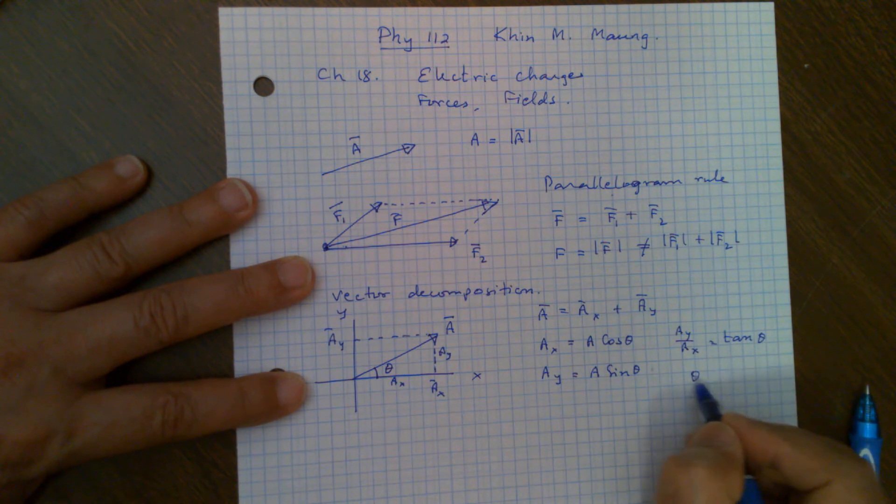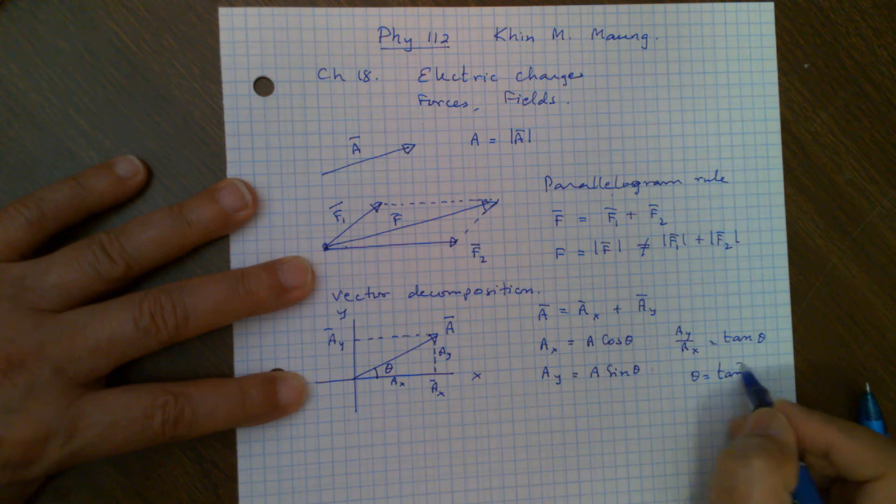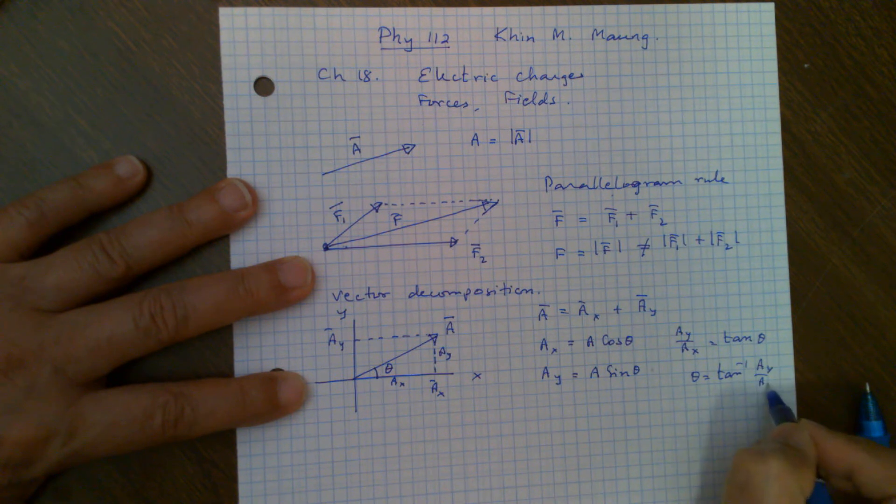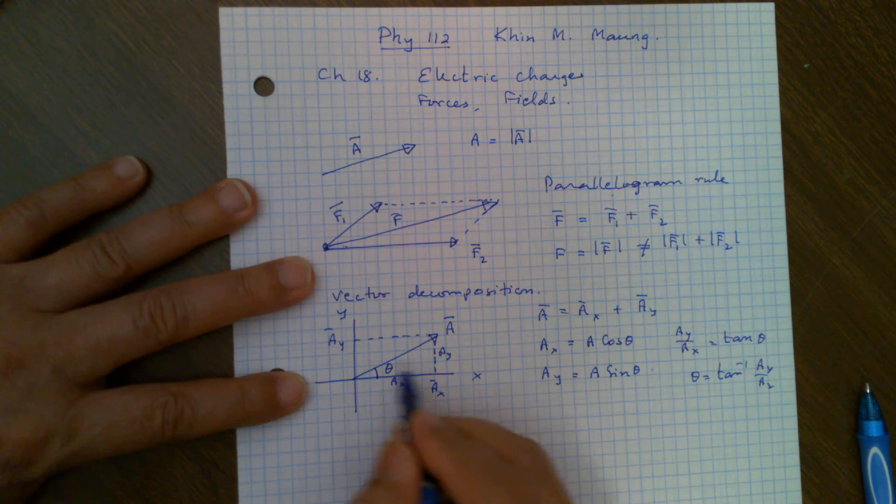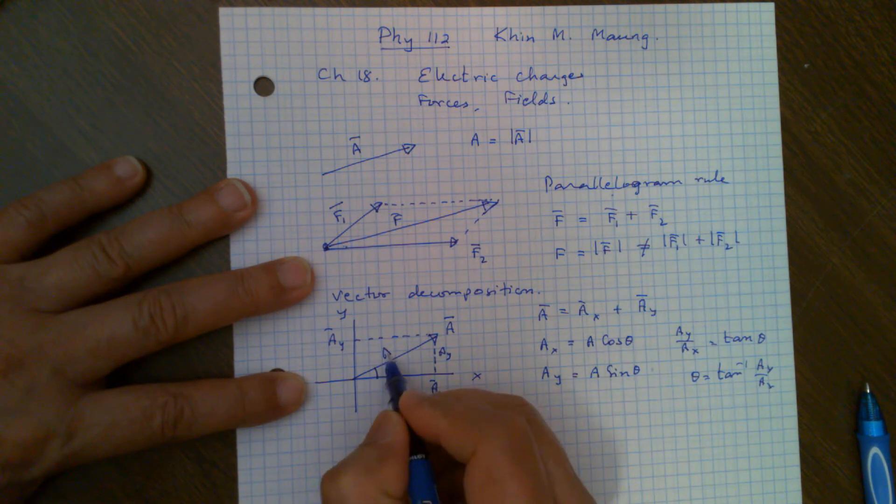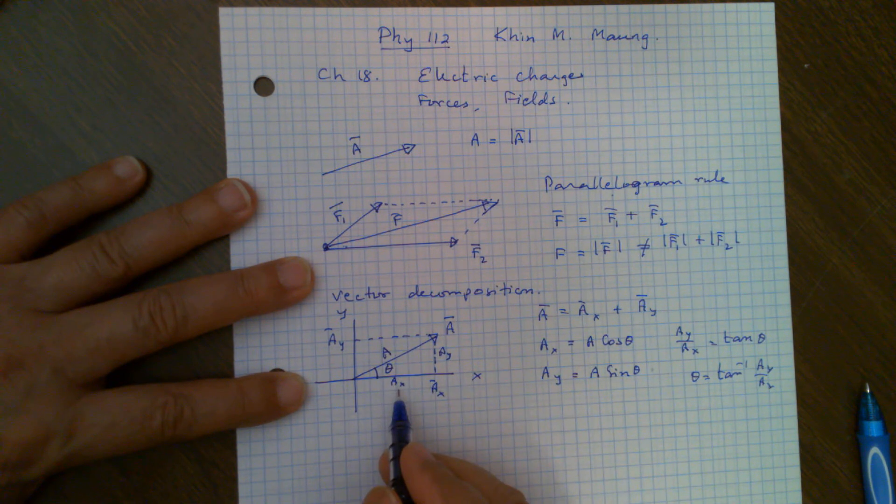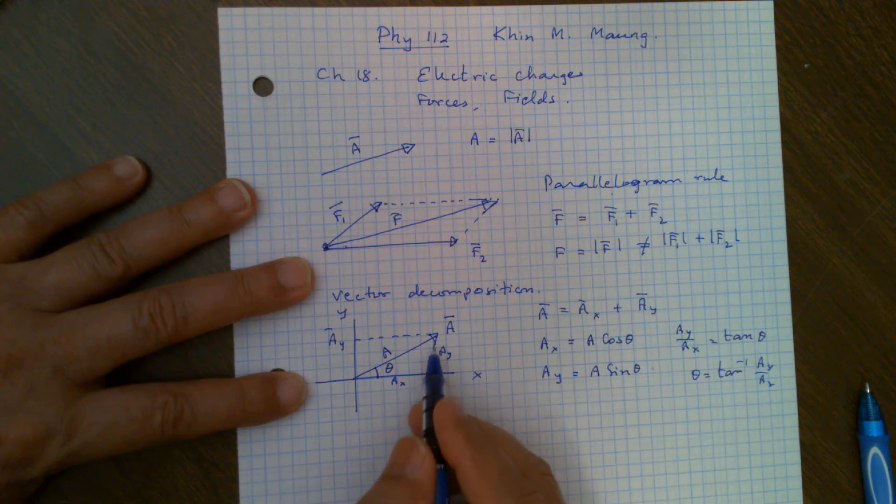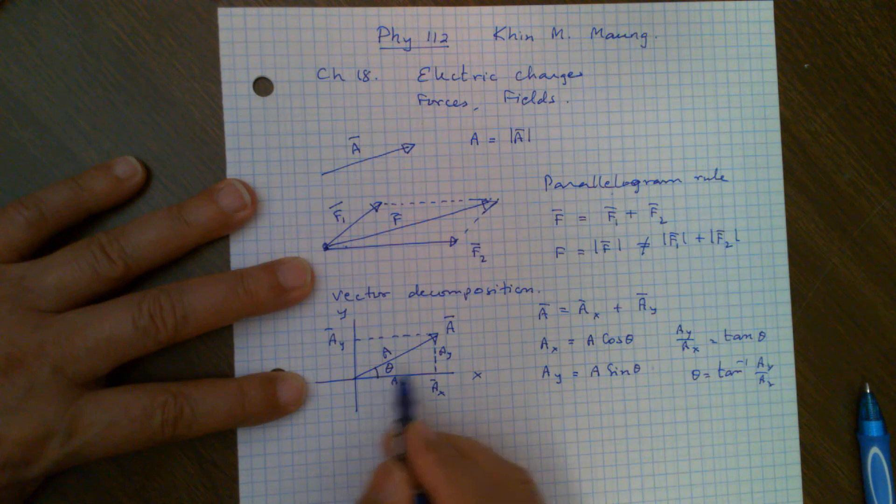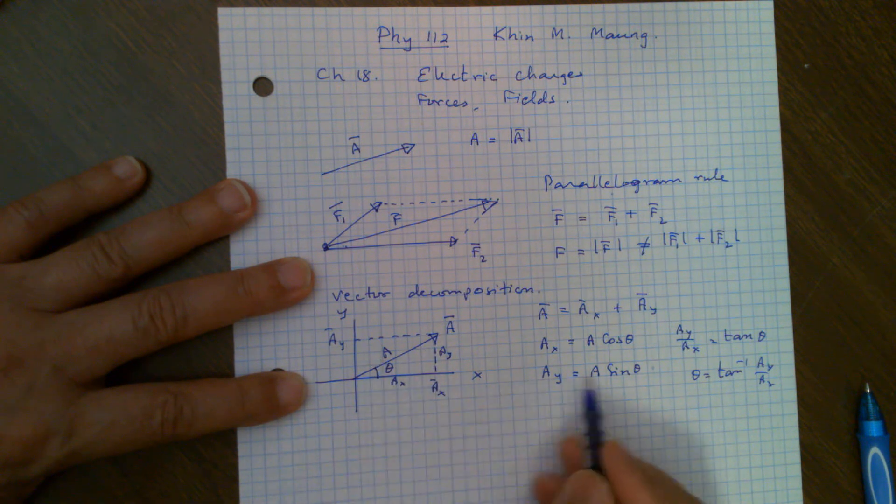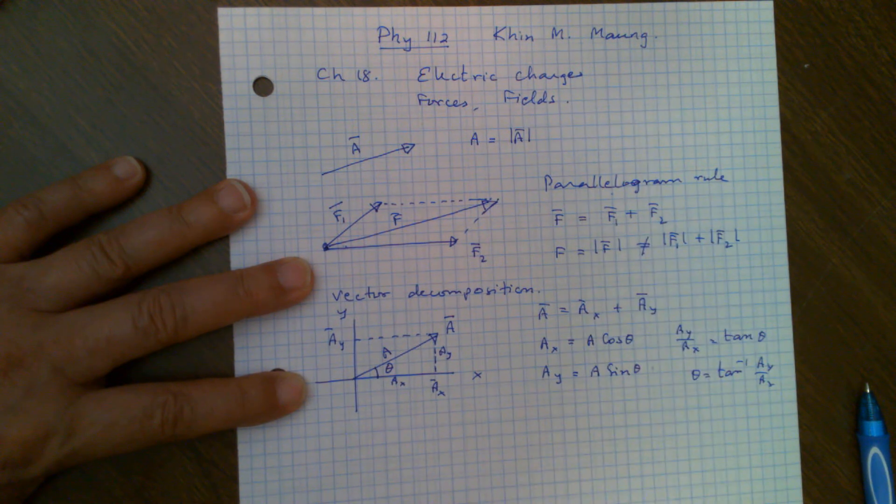So you see AY divided by AX is tangent theta. Or theta equals tangent inverse AY by AX. From this little triangle, you can see that this is the magnitude of A. So AX divided by A is adjacent divided by hypotenuse, so it will be cosine. And AY, the opposite to the angle, the one facing the angle, AY divided by hypotenuse A, that will give you sine theta.